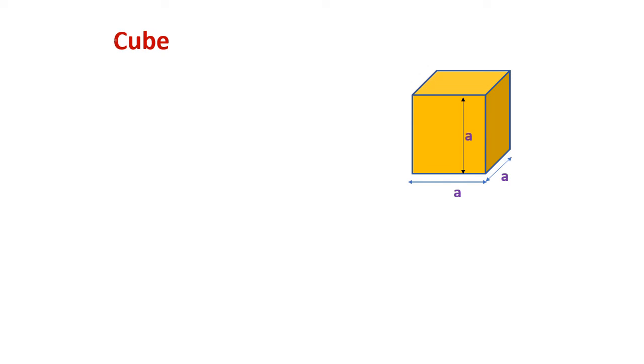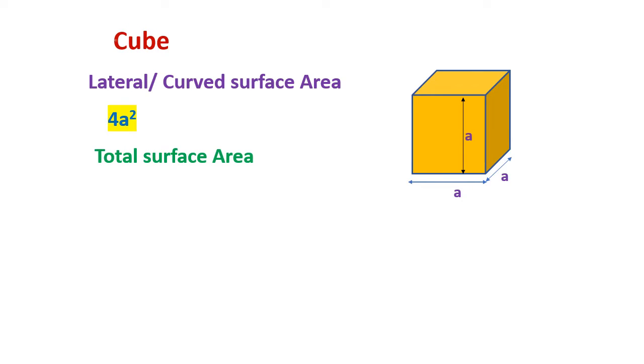Cube: curved surface area 4a square, total surface area 6a square, where a is side, volume a cube.